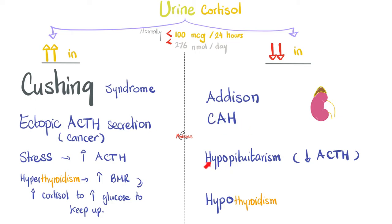What is the opposite of Cushing disease? Hypopituitarism — the pituitary is not making any ACTH. And what is the opposite of hyperthyroidism? Hypothyroidism.